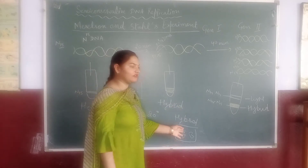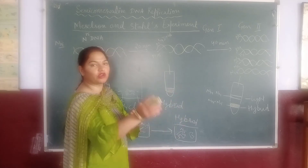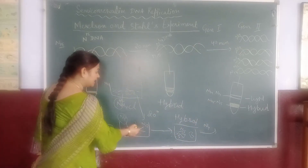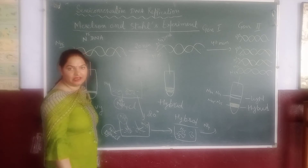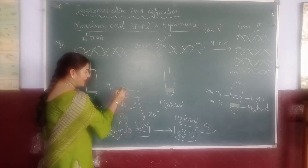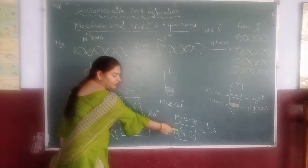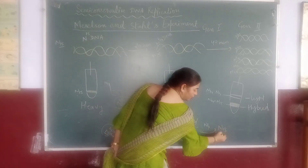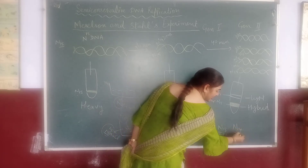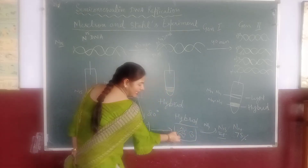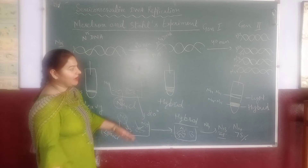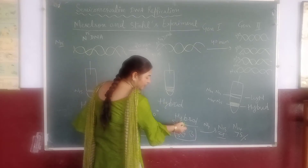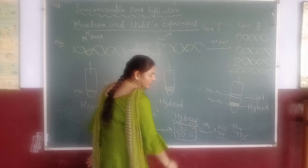Now, the hybrid DNA with half N15 and half N14 continues to grow in the N14 medium. As we grow in N14 medium, the N15 character gradually becomes smaller. In the next generation, N15 is 50% and N14 is increasing — approximately 75% N14 and 25% N15 in subsequent generations.